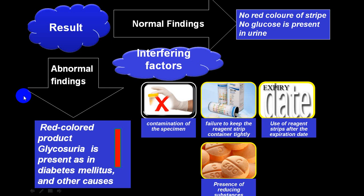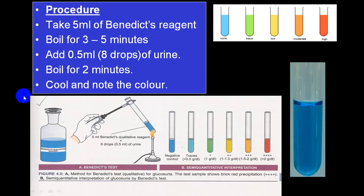The best way to detect glucose is by Benedict's reaction. Take 5 ml of Benedict's solution in a clean test tube and boil it for three to five minutes. If it doesn't change color, add 0.5 ml (about 8 drops) of urine, boil again for two minutes, then allow it to cool. If the color remains blue, there is no sugar. Green color indicates 1+ sugar. Yellow indicates 2+. A reddish change indicates 3+. Brick red indicates 4+, suggesting more than 2 grams per deciliter.